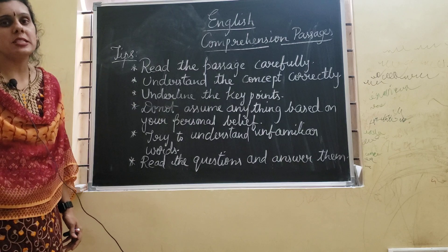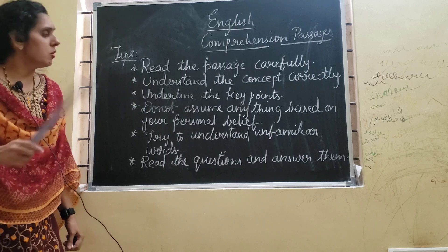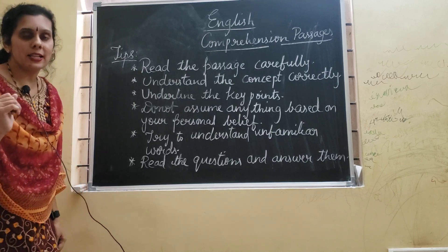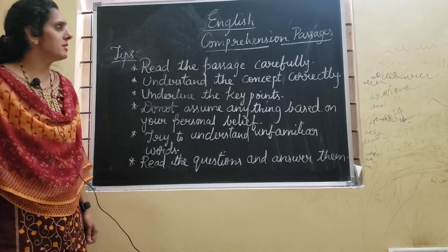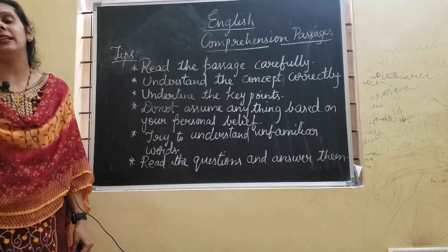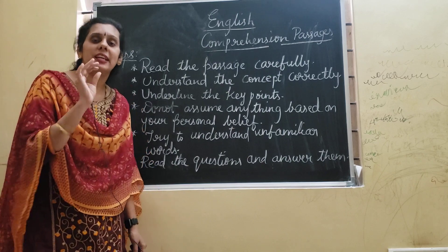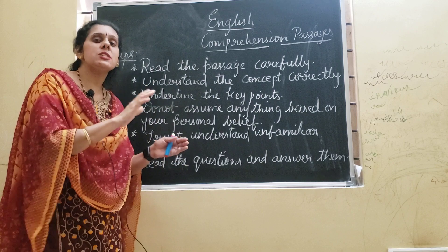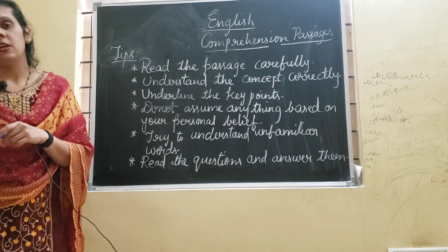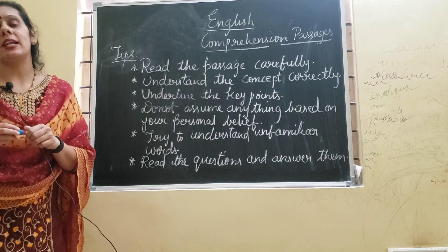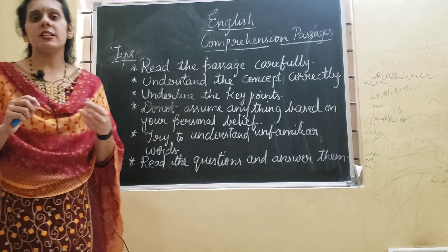Try to understand unfamiliar words — words which are not known to you. Try to understand why and how that word is given. For a few comprehension questions they will ask you to write synonyms of words. Don't just write the meaning of the word — first see where that word is used in the sentence, because for a few words they give separate meanings, but within a sentence the word may carry a different meaning. For example, take the word 'watch' — as a verb it means seeing, but as a noun it may mean a wristwatch.